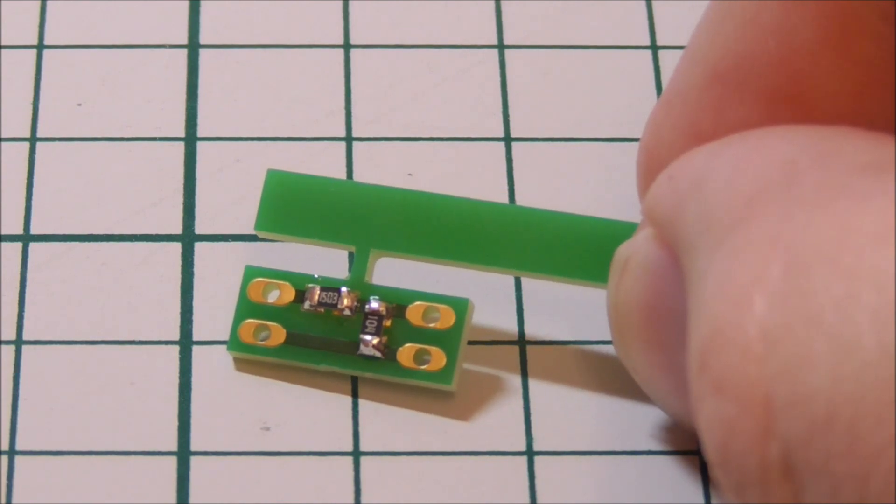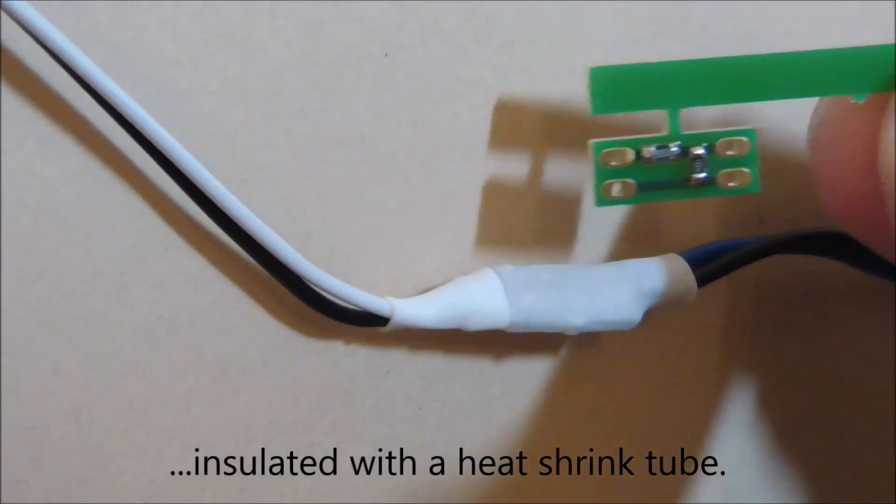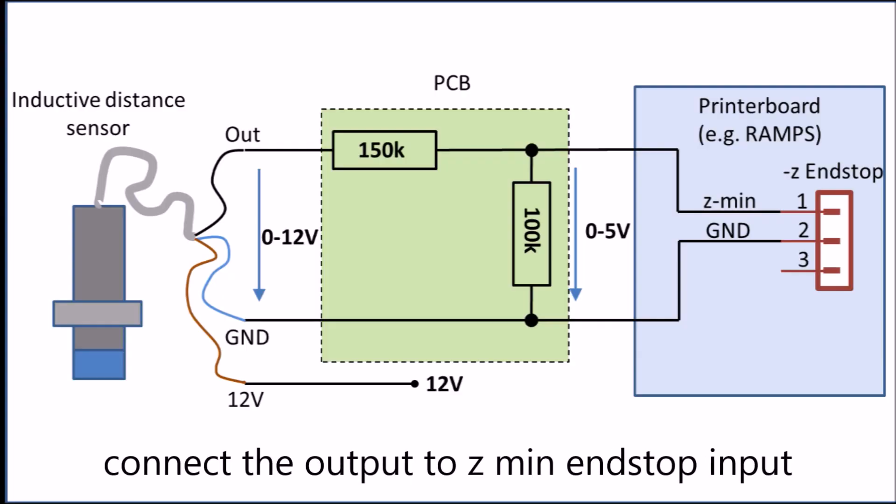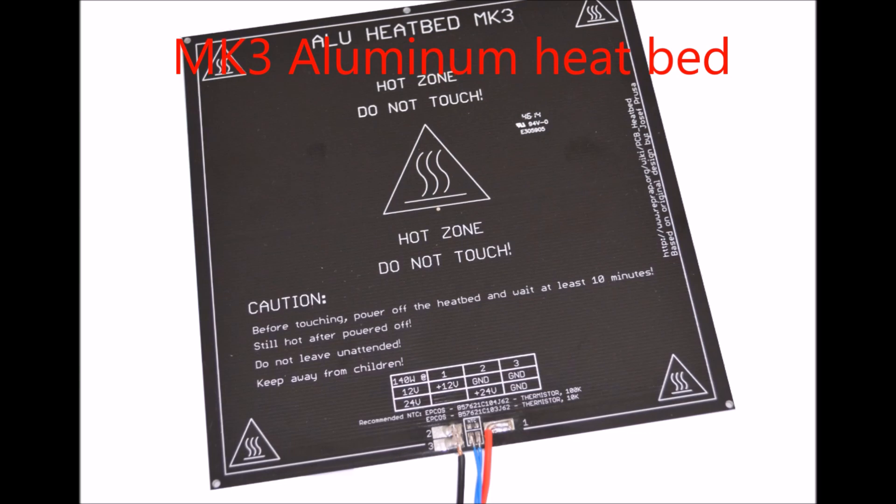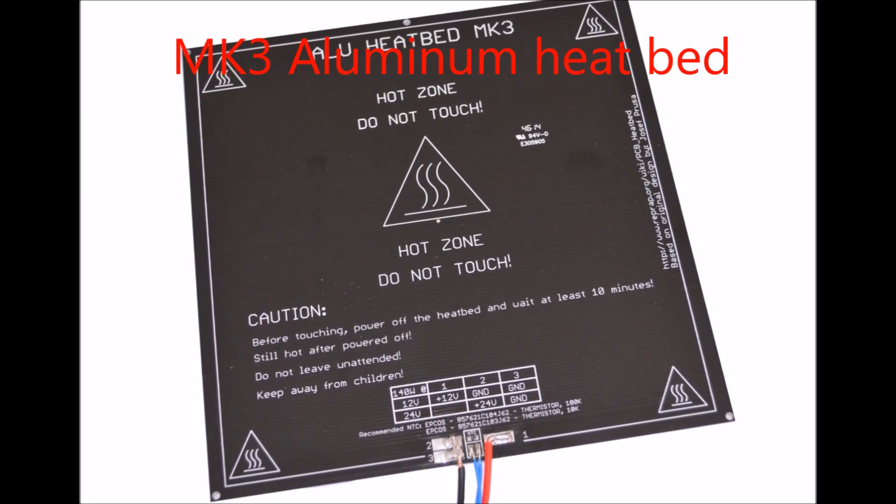Connect the output of the voltage divider to the input of the minus Z end stop and the ground to the printer board ground. You need to use a conductive heat bed with a certain thickness without using any glass sheet, otherwise it won't work with an inductive sensor.